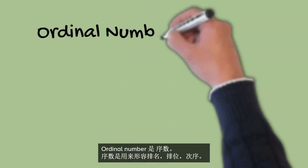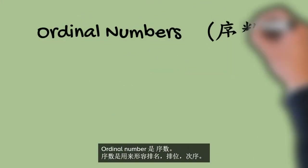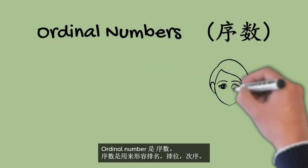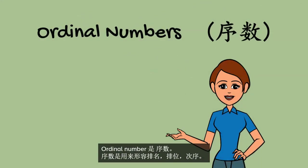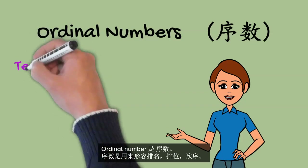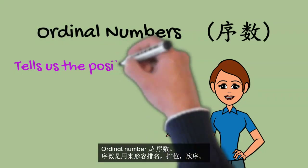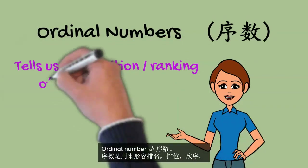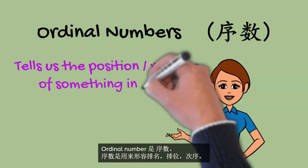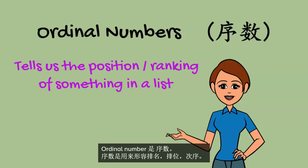Now, we will look at ordinal numbers. Ordinal numbers tell us the position or ranking of something in a list.